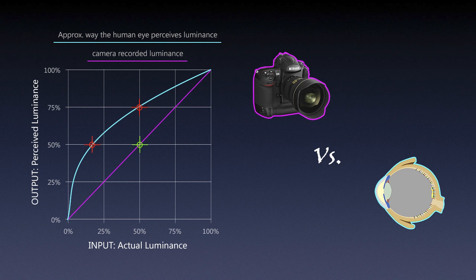So the two don't match. The idea is: we see something in the field, capture it with a camera, and when we see it later in print or on screen we want them to match. If the camera captures one way and we see it on screen much brighter or darker, that's a problem. We need to find a way to match one with the other.